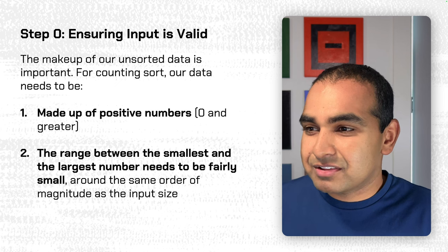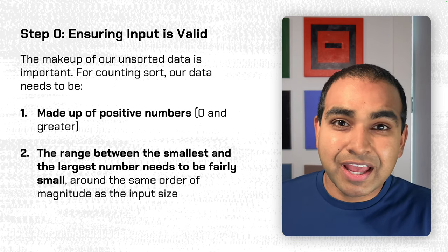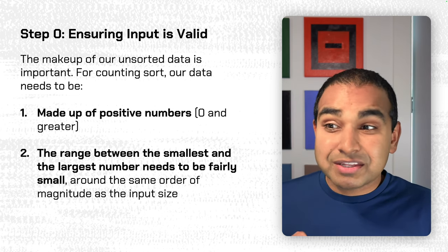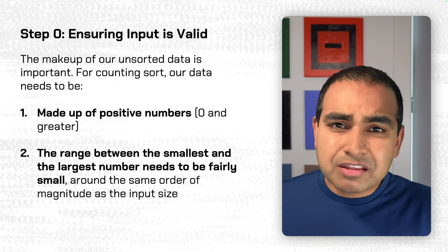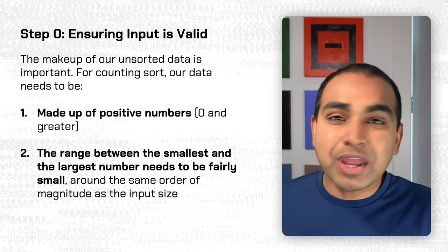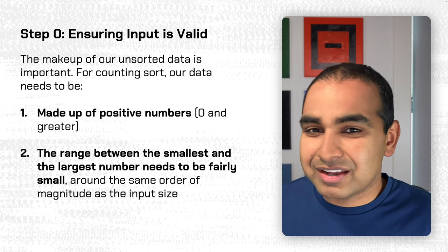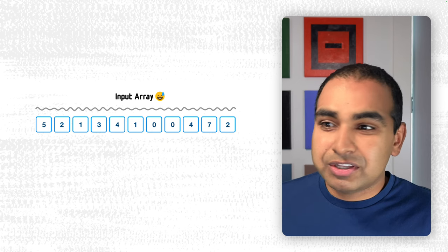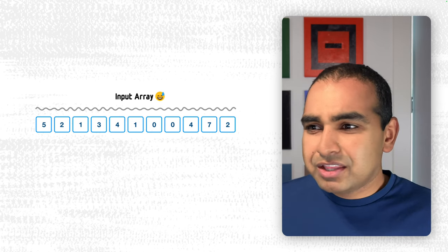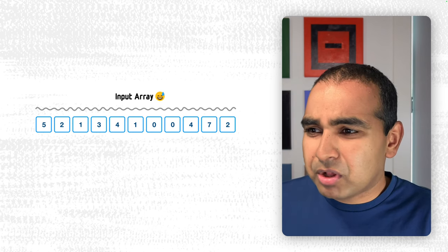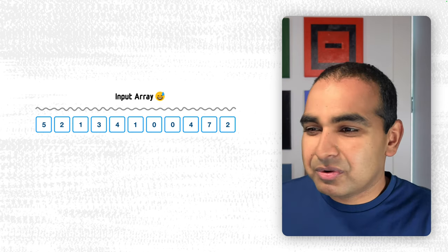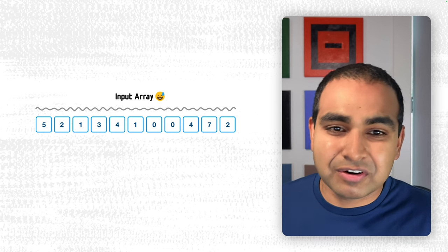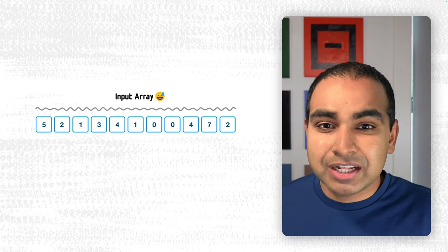Step zero: the input values that counting sort needs to sort have to be in a very particular format. They have to be positive numbers, zero and greater — integers, so no decimals. And the range between the smallest and largest number needs to be fairly small, ideally in the same order of magnitude as the input size. Looking at our input, all numbers are integers greater than or equal to zero. The lowest is zero, the highest is seven, and we have about 11 entries — so we're pretty much in the same range of numbers as the size of our input, making it a great candidate for counting sort.